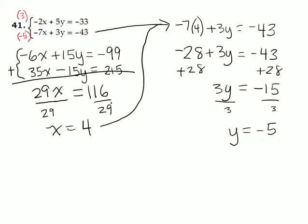Now let's write our answer as an ordered pair. Always put x first and y second. And we'll get the point 4 comma negative 5. And again, remember that you need to check these, but we don't have time to do that here.